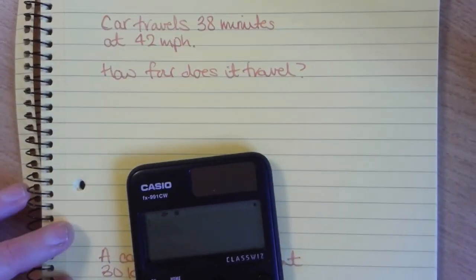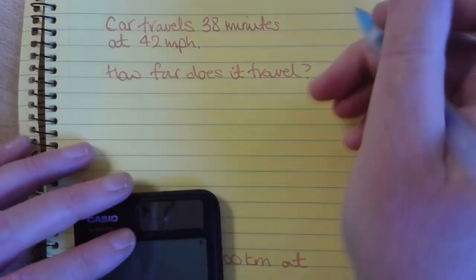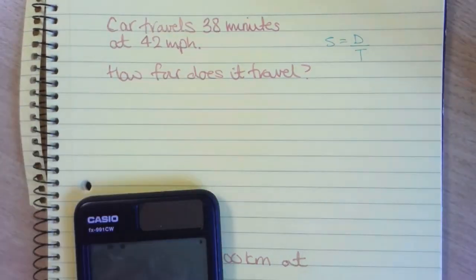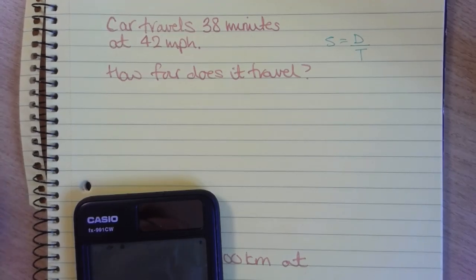A car travels 38 minutes at 42 miles per hour. We're going to use speed as distance divided by time. Now the distance is what we want to find.